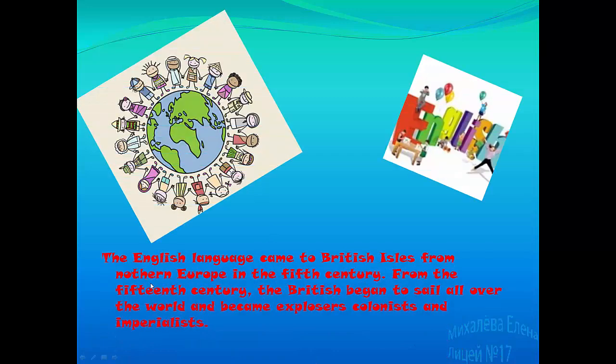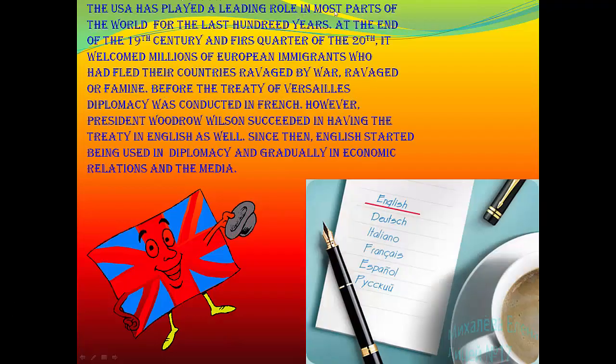The English language came to British Isles from Northern Europe in the 5th century. From the 15th century the British began to sail all over the world and became explorers, colonists and imperialists. The USA has played a leading role in most parts of the world for the last hundred years. At the end of the 19th century and first quarter of the 20th century it welcomed millions of European immigrants who had fled their countries ravaged by war and famine. Before the Treaty of Versailles diplomacy was conducted in French. However, President Woodrow Wilson succeeded in having the Treaty in English as well. Since that time English started being used in diplomacy and gradually in economic relations and media.